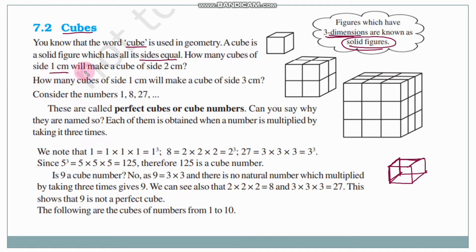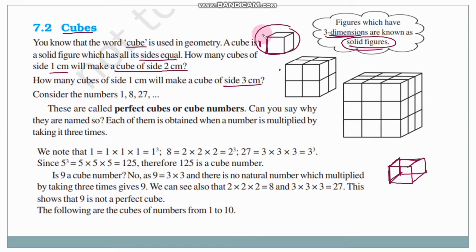How many cubes of side one centimeter will make a cube of side two centimeters? Let us consider a cube with side one centimeter — one dimension equals one centimeter. How many such cubes joined together will form a cube of two centimeters? Similarly, how many cubes of side one centimeter will make a cube of side three centimeters? Let us consider the numbers: 1, 8, 27.